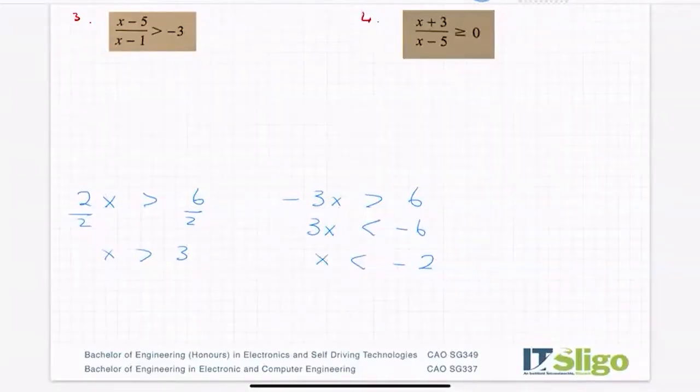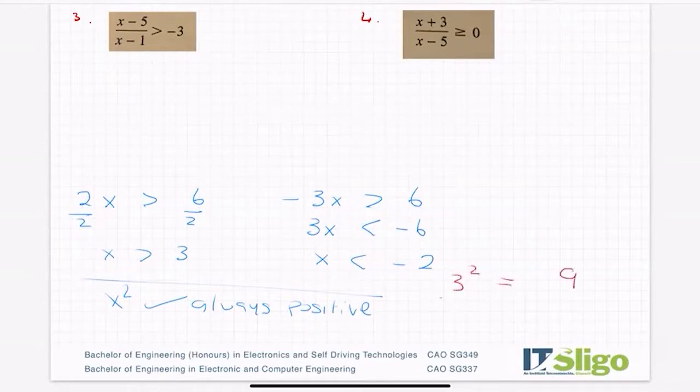The workaround we have is that when you square a number, it's always positive. Think of the number 3 squared. That's 9. Think of the number minus 3 squared. That is also 9.